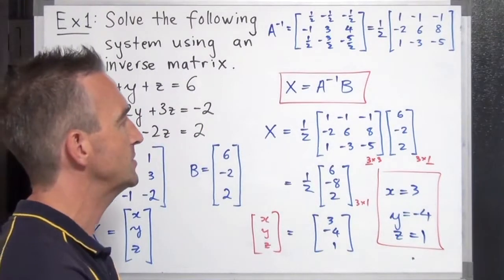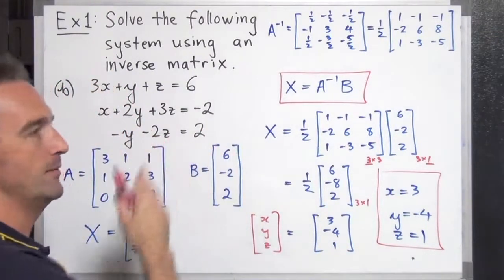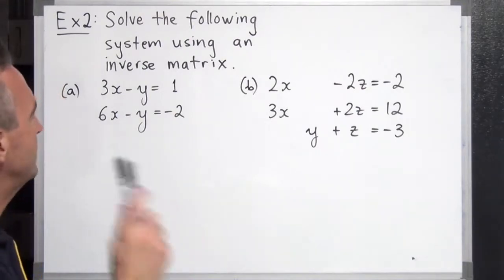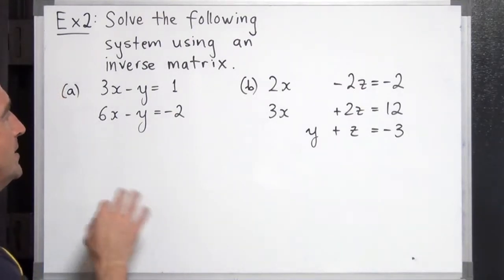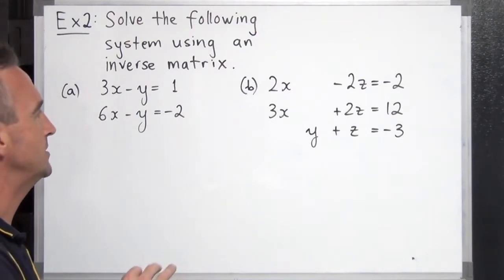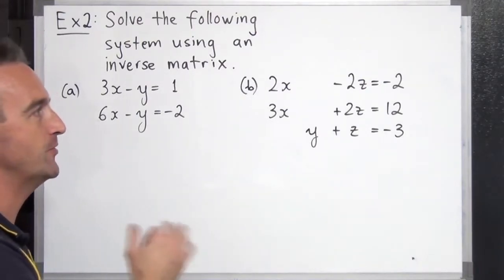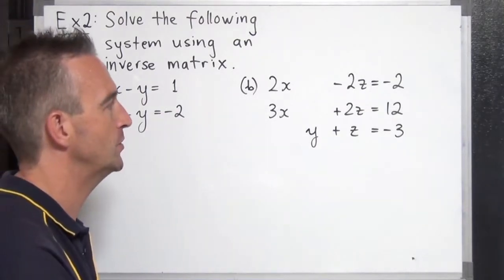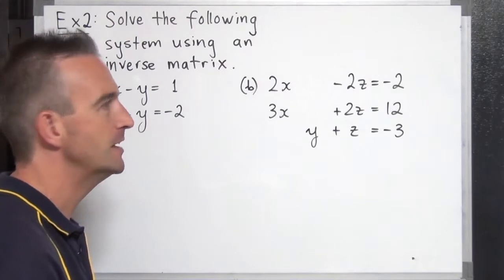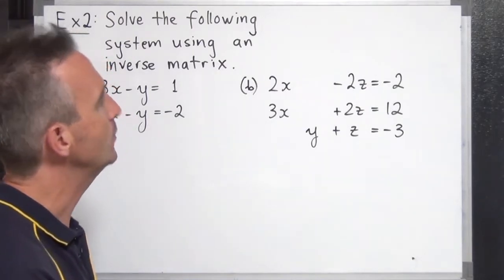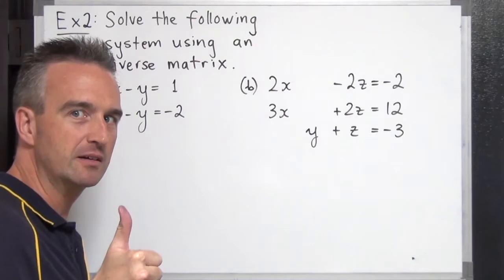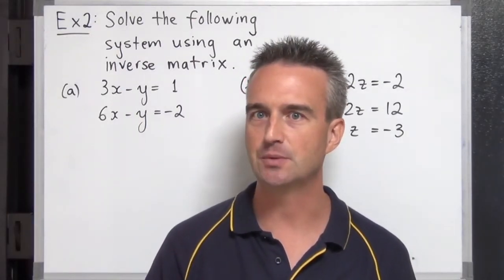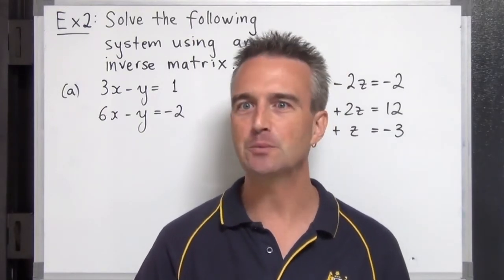That's using an inverse matrix to solve a 3 by 3 system of equations. Feeling confident? It's now your turn — please try Example 2. For part A you've got a 2 by 2 system: remember to use the formula to get the inverse matrix. For part B it's a 3 by 3 system — you'll need to go through Gauss-Jordan elimination to find the inverse of the coefficient matrix. Good luck, and remember to share your answers in the comments. Thanks for watching and we'll see you again soon.